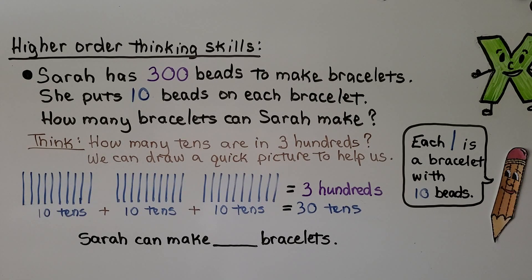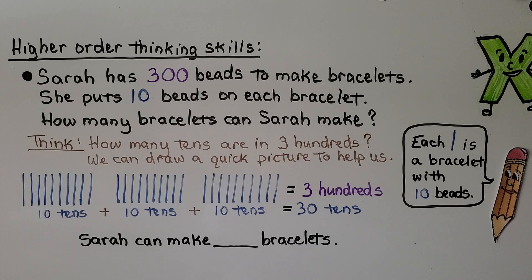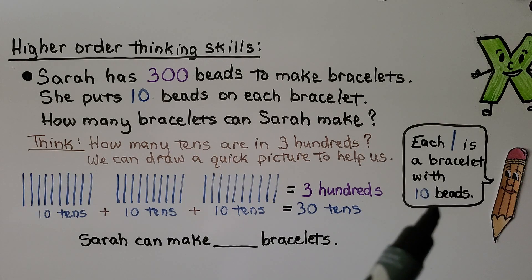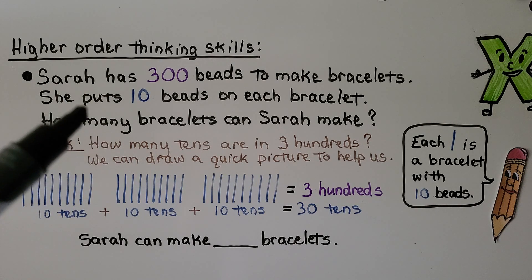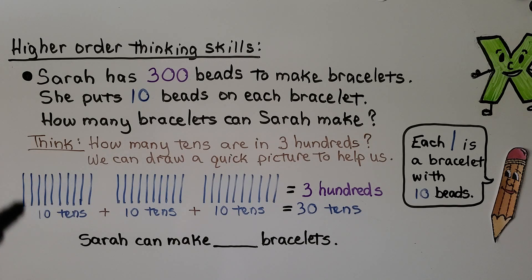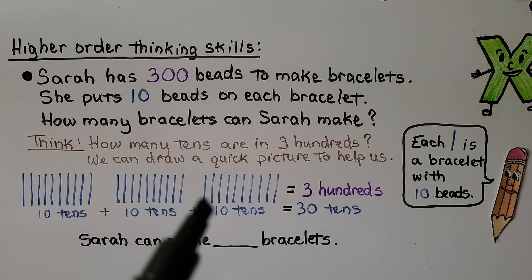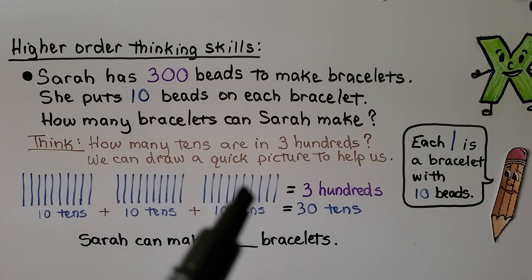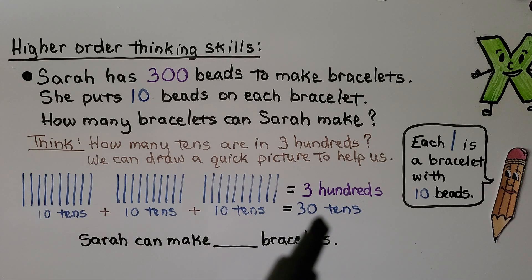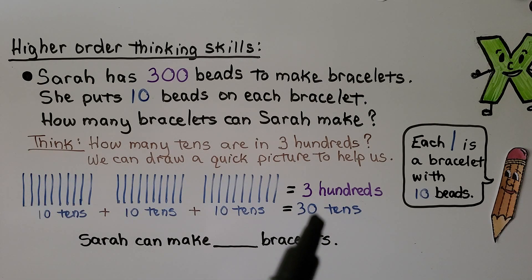Now let's try some higher order thinking skills. Sarah has 300 beads to make bracelets. She puts 10 beads on each bracelet. How many bracelets can Sarah make? We think: how many tens are in three hundreds? We can draw a quick picture to help us — we can draw a 10 as a line, and each line is a bracelet with 10 beads. We can count 10 tens, and 10 tens, and 10 tens. We have 100, 200, 300. That's 30 tens — 10 tens plus 10 tens plus 10 tens equals 30 tens. That means Sarah can make 30 bracelets.